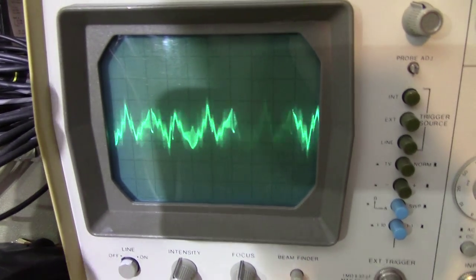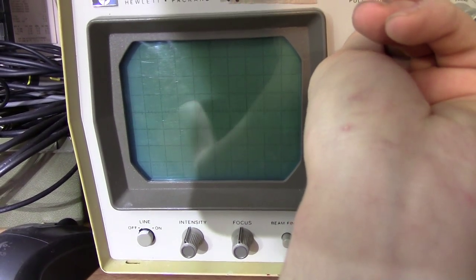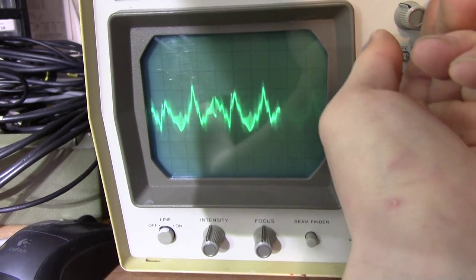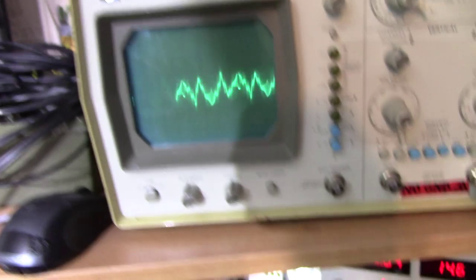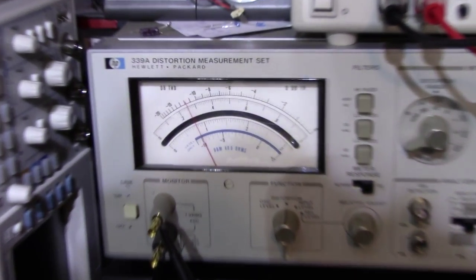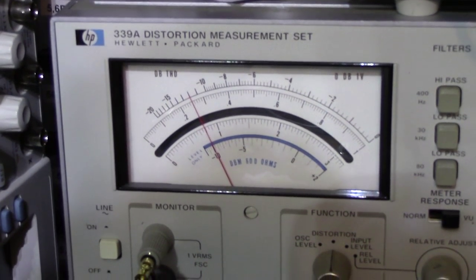but the distortion meter isn't even picking it up properly. Even with no low-pass filters installed, it's just reading some all-over harmonics, making everything look fine. Indeed, it's way below 3% distortion right there.